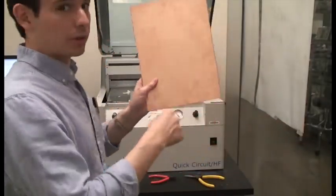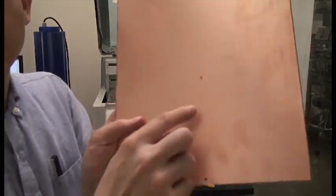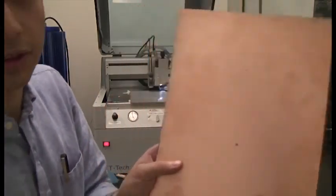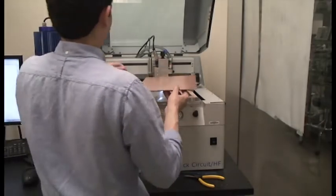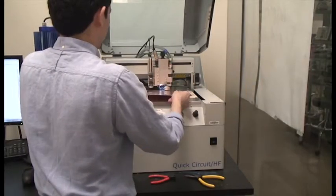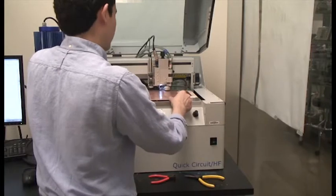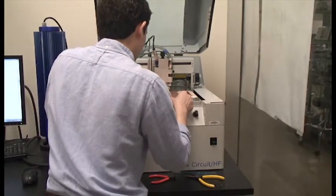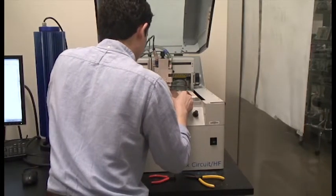Once you've got your board with the pre-drilled holes—there should be three pre-drilled holes in there—then you can just take your board, put it on top of the aluminum sacrificial board, and line up the pins.